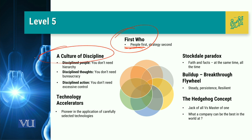When we talk about the culture of discipline, we have three points: disciplined people, disciplined thought, and disciplined action. With disciplined people, you don't need hierarchy — no chain of command, span of control, or lines of authority. With disciplined thought, you don't need bureaucracy, because bureaucracy is required where rules and regulations need to be strongly enforced. Disciplined action means you don't need excessive control, because excessive control is only required when people lack will and readiness.